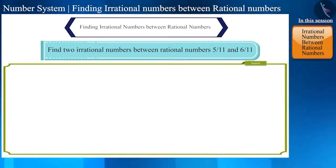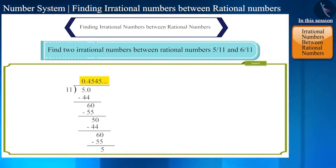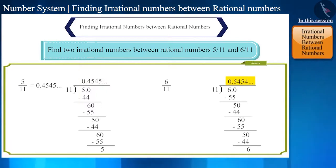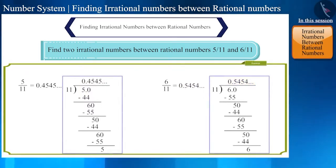The decimal form of 5 by 11 is .45454545 and the decimal form of 6 by 11 is .545454 etc. You can obtain these by the division method.